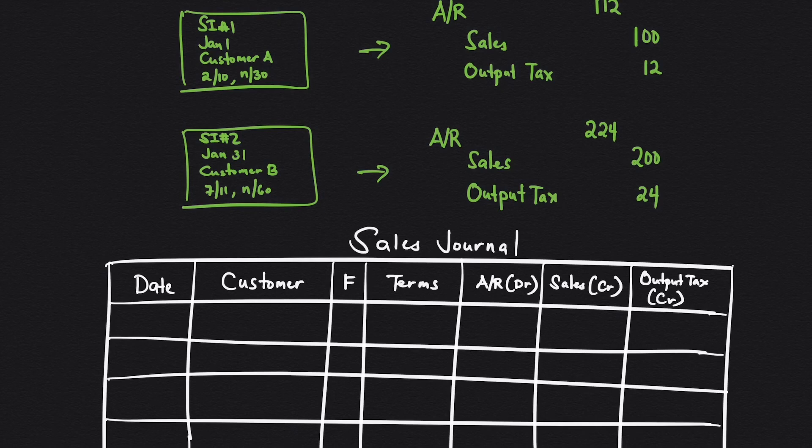On the right, you have the general journal entries. Meaning, if you try to record these transactions in the general journal, it would look like this. As I've mentioned in a separate video, instead of recording repetitive transactions like sales on account in the general journal, it would be better if it is recorded in the special journals, specifically the sales journal.